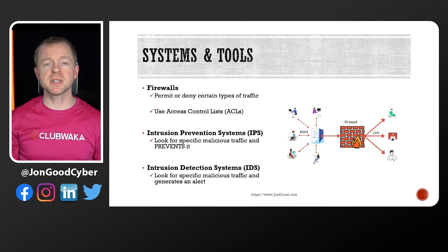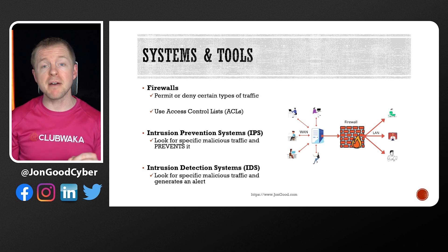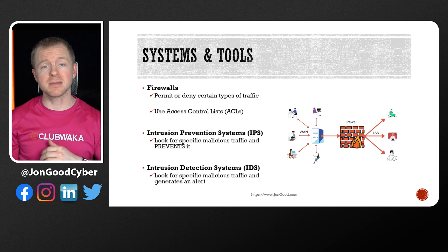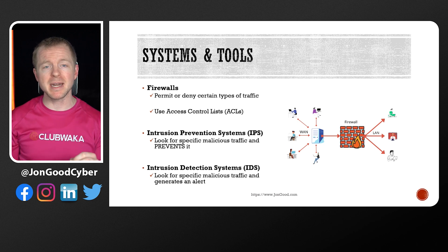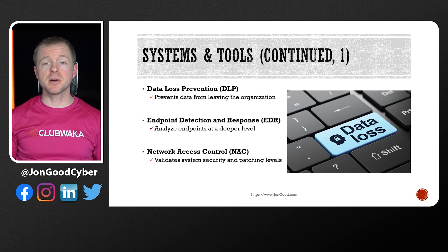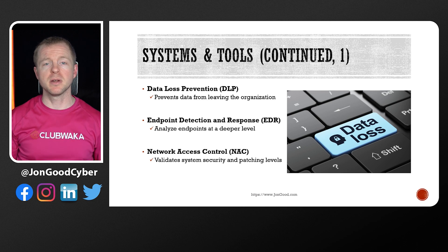We have intrusion prevention systems, or IPSs, which actually analyze traffic deeper and they stop known attacks. Then we have intrusion detection systems, which perform the same analysis as an IPS, but it's only going to generate an alert — it's not going to actually stop it. Data loss prevention, or DLP, are systems that help to prevent data from leaving the organization.